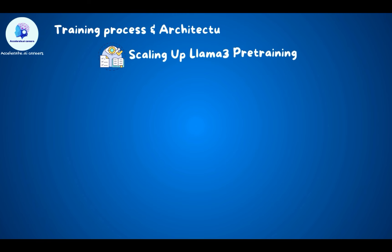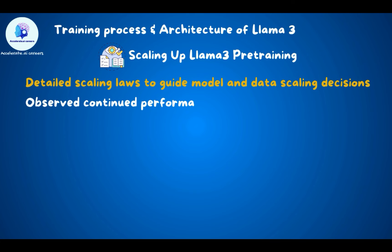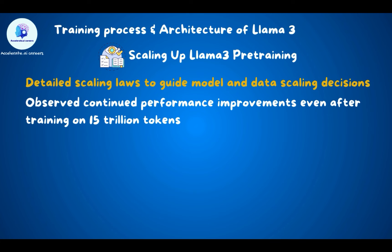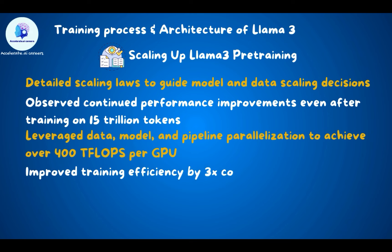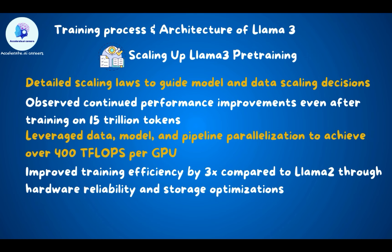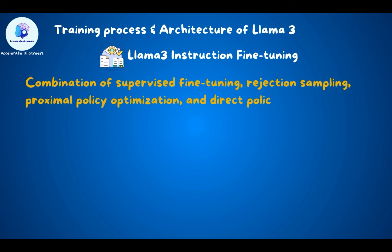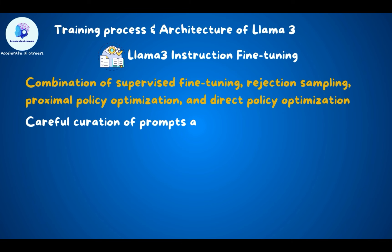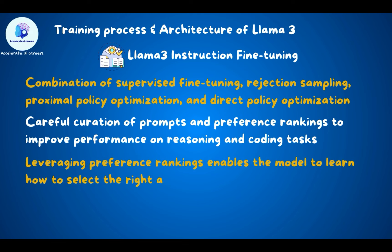For scaling, detailed scaling laws guided model and data scaling decisions. Continued performance improvement was observed even after training on 15 trillion tokens. They leveraged data, model, and pipeline parallelization to achieve over 400 TFLOPS per GPU, improving training efficiency by three times compared to LAMA 2. For instruction fine-tuning, a combination of supervised fine-tuning, rejection sampling, proximal policy optimization, and direct policy optimization was used, with careful curation of prompts and preference rankings to improve reasoning and coding performance.